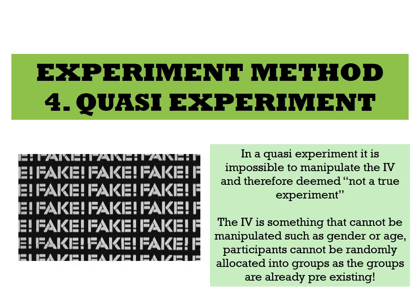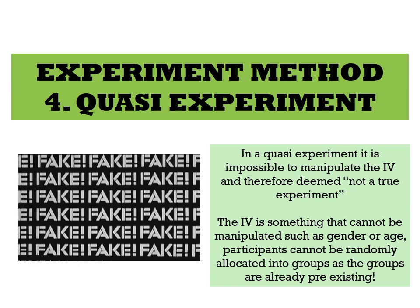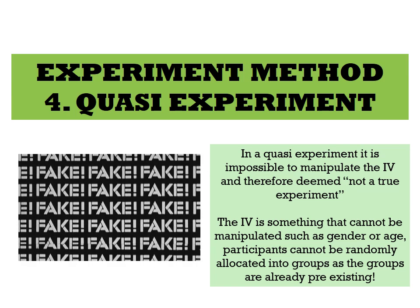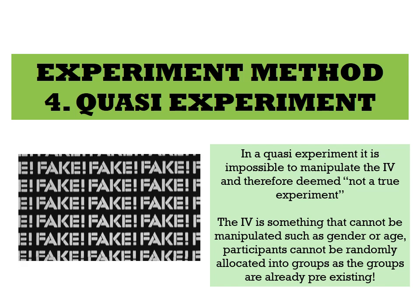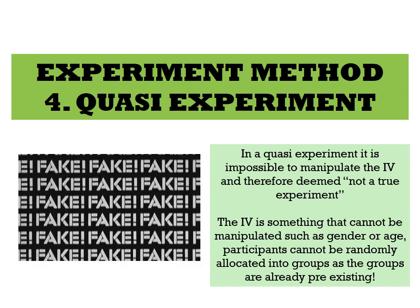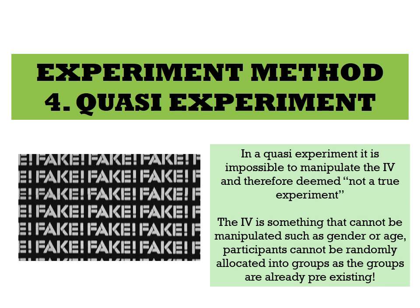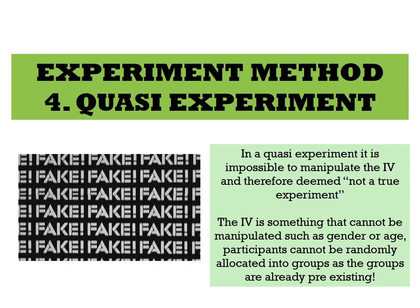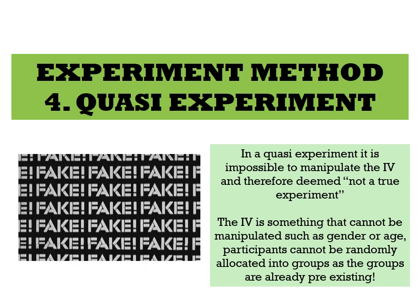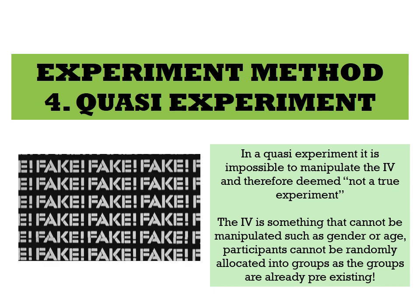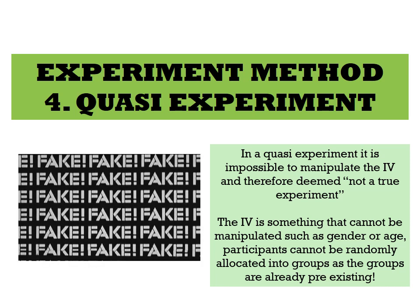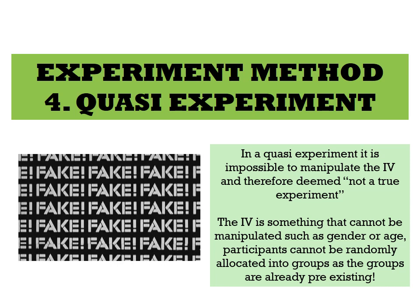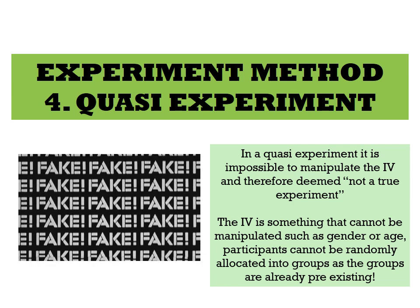You cannot change someone's gender or age, or if we're looking at people who have mental health disorders, you can't make somebody have a mental health disorder — it is already pre-existing. So in a quasi-experiment you cannot manipulate the independent variable. For example, an experiment looking at differences between males and females is a quasi-experiment because you cannot manipulate whether or not they fit into those groups.